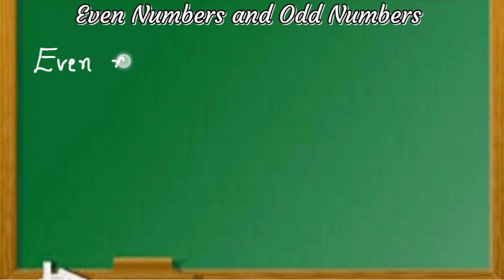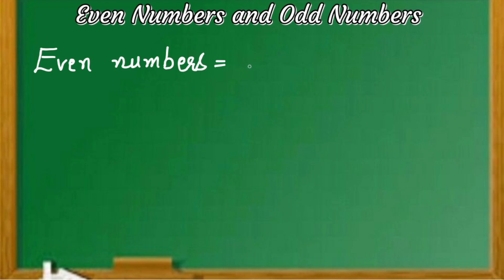Numbers have been divided into different types. For example, even numbers and odd numbers. These are the basic two types of numbers, but there are other numbers also like integers, prime numbers, composite numbers, real numbers, etc., that we will learn later. Now, let us learn about even numbers first.